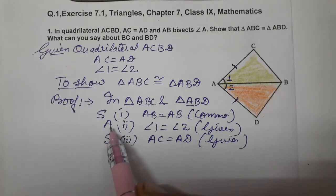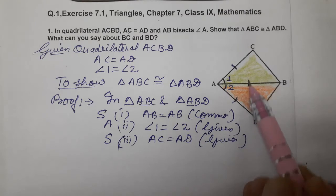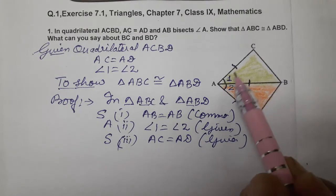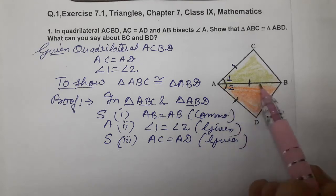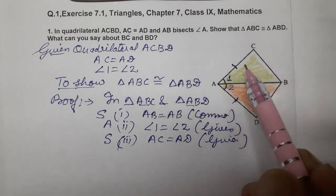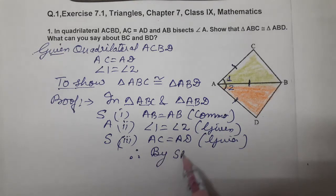This follows SAS: two sides and the included angle. Side, angle, side. Therefore, by SAS congruence axiom,